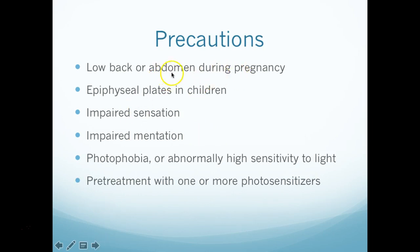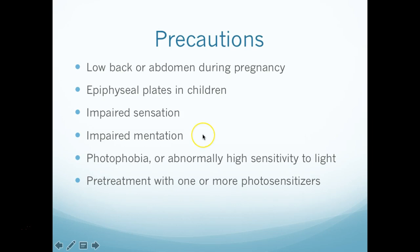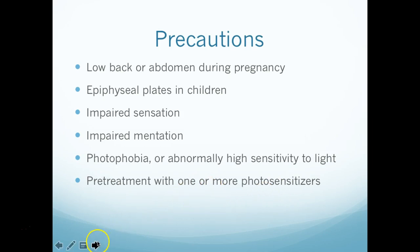Precautions include the low back and abdomen during pregnancy — you'll see this on almost every modality — as well as epiphyseal plates in children, and impaired sensation or mentation. Those four things appear on almost every modality, so use your clinical judgment guided by the physical therapist's evaluation. Additional precautions include photophobia, or abnormally high sensitivity to light, and pre-treatment with one or more photosensitizers — certain medications make patients more susceptible to light, so know what medications your patient is on.